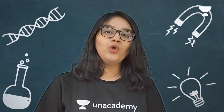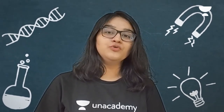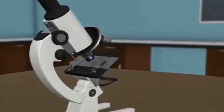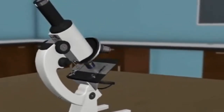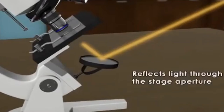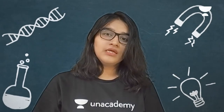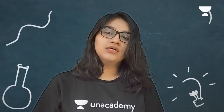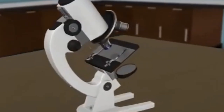Next is the stage — a metallic platform with a hole in the center. The hole allows light to pass through it so that it can travel through the specimen and into the body tube. On the stage we position the slides containing the microscopic specimen to be viewed, which can be held in place by stage clips present on either side of the microscope.